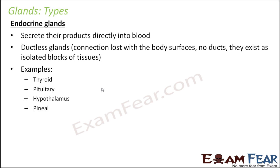Examples of endocrine glands are thyroid, pituitary, hypothalamus, and pineal. These are all endocrine glands. We studied the endocrine system in class 10th, where we saw the function of each endocrine gland. They play a very important role in the control and coordination system of our body. For now, you should just understand what exocrine glands and endocrine glands are.